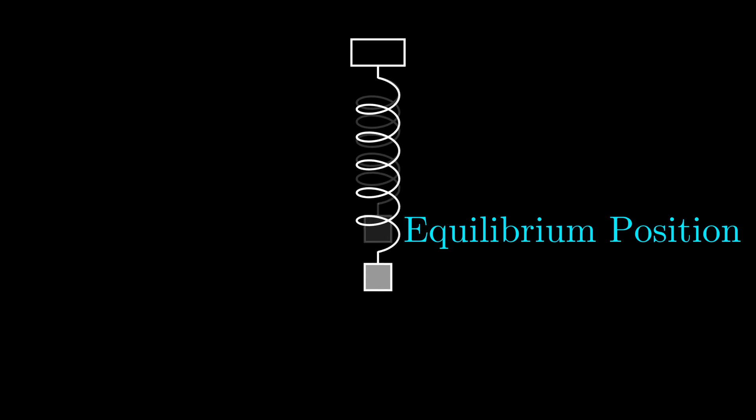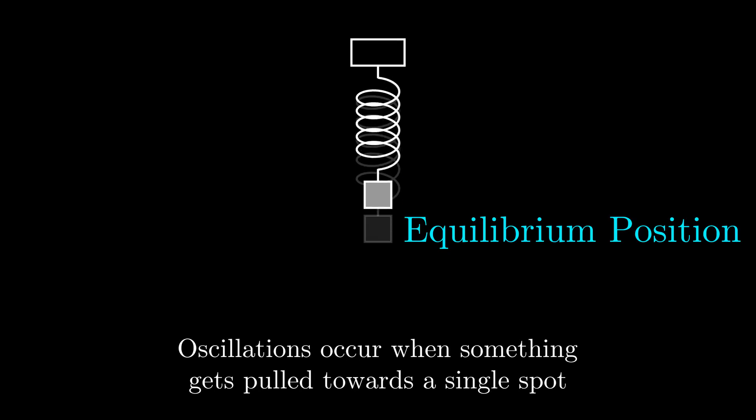After this, the spring starts pulling back towards the middle again, but it once again overshoots. In an ideal situation, this pulling and overshooting continues indefinitely, causing an oscillation. This demonstrates the fundamental idea behind oscillations. Oscillations occur when something gets pulled towards a single spot. This is the central idea behind oscillations, and we will be appealing to it several times throughout the video. Also, in many situations, such as with the spring, the amount that things are pulled towards the equilibrium position is directly proportional to the distance to the equilibrium position.